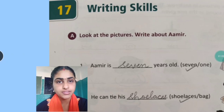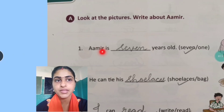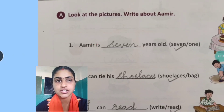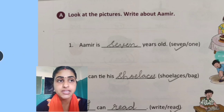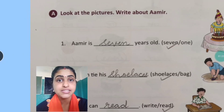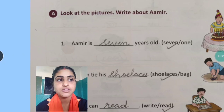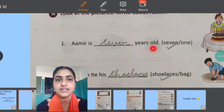The options are given in the bracket. Let us start the first one. Amir is dash years old. The options given are 7 and 1. Amir is here celebrating his birthday — cake cut kar raha hai. So uske cake ke upar deekho kitne candles hai. Count karo: 1, 2, 3, 4, 5, 6 and 7. So Amir is 7 years old.